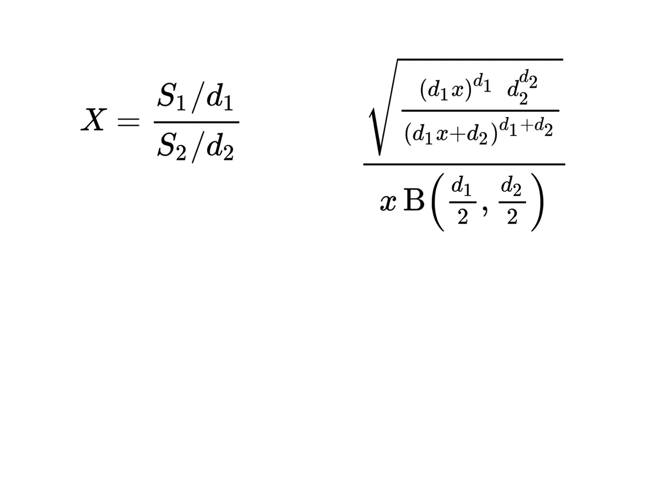Welcome to this video. In this video I'm going to show you how to derive the PDF of the F distribution from the definition of the F distribution as the quotient of two chi-squared random variables. I've taken these formulae from Wikipedia. Here is the definition of an F random variable x in terms of two chi-squared random variables, and I want to go from this definition to the PDF formula.